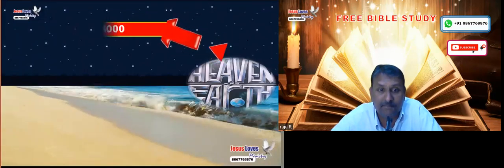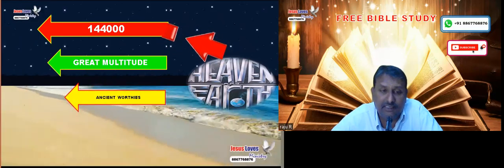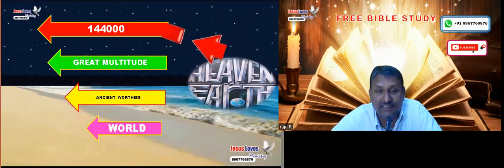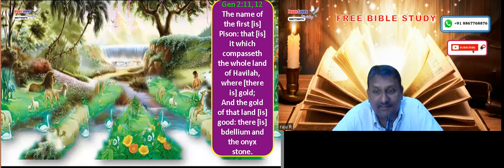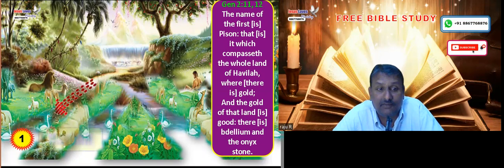In the promise which God made to Abraham, the heavenly salvation has two parts: the 144,000 and the great multitude. And in the earthly salvation there are two parts: the ancient worthies and the world. The first river, Pishon, went into the land of Havilah. What was there in the land of Havilah? Gold. What is the meaning of gold in the Bible? We studied this in the tabernacle class.